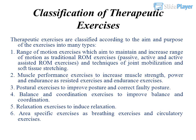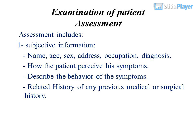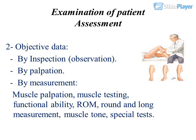Examination of patient — Patient assessment includes: 1. Subjective information: name, age, sex, address, occupation, diagnosis, how the patient perceives their symptoms, behavior of the symptoms, and related history of any previous medical or surgical history. 2. Objective data: by inspection, observation, palpation, measurement, muscle testing, functional ability, ROM measurement, muscle tone, and special tests.